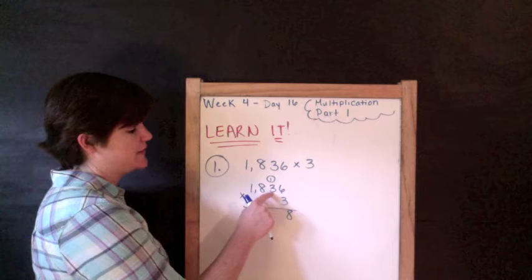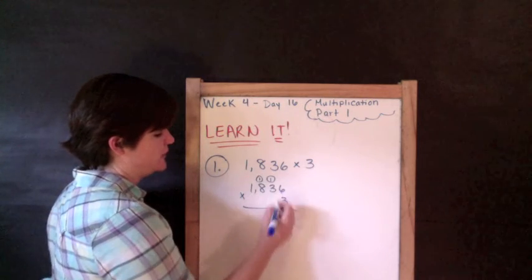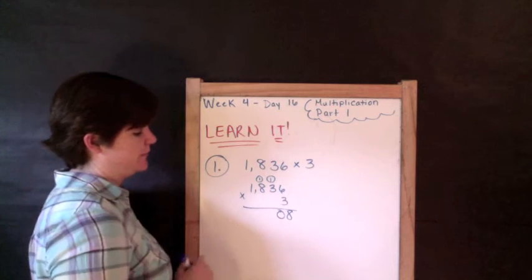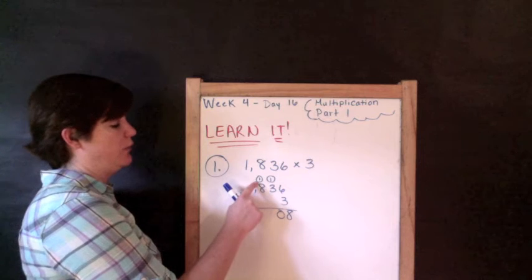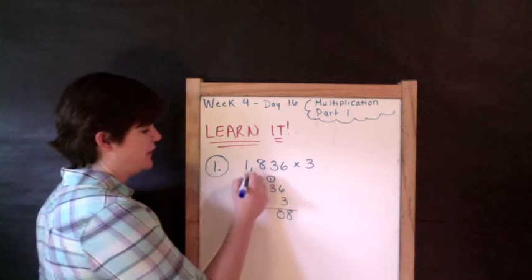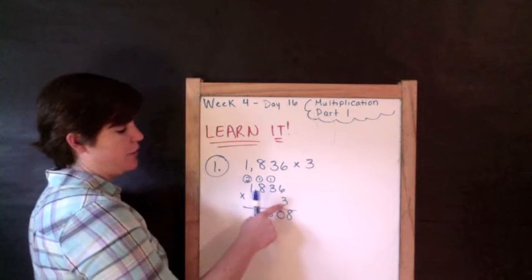3 times 3 is 9 plus 1 is 10, which is also a two-digit number. 3 times 8 is 24, and we add what we regrouped. That would be 25, so 2 and 5 down here.